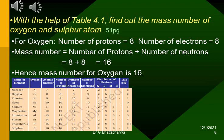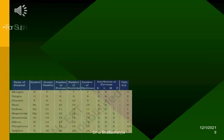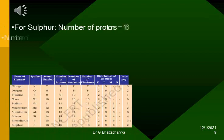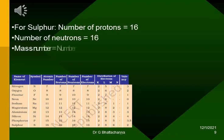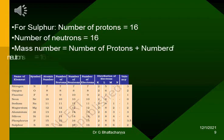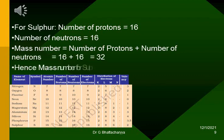For sulfur, number of protons equals 16, number of neutrons equals 16, mass number equals number of protons plus number of neutrons equals 16 plus 16 equals 32, hence mass number for sulfur is 32.